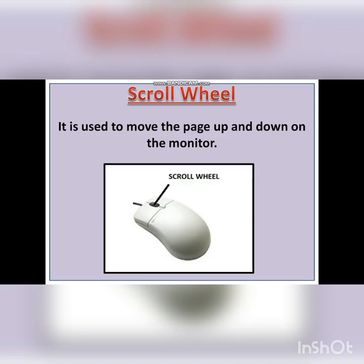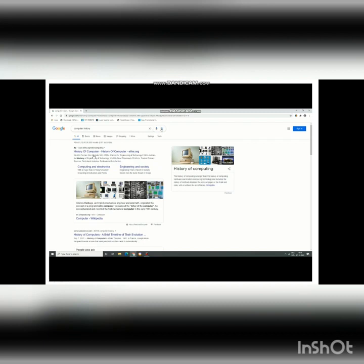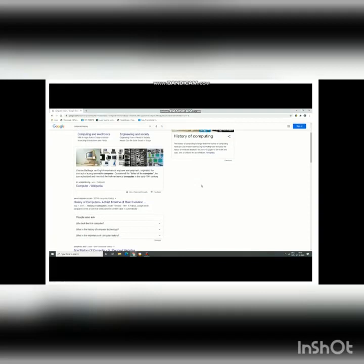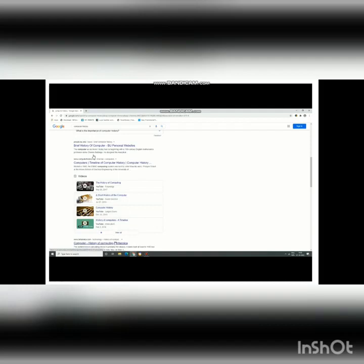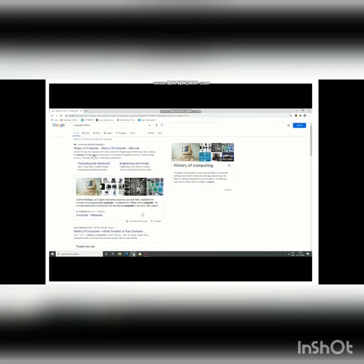Scroll wheel. The scroll wheel is used to move the page up and down on the monitor. Children, you can see the scroll wheel placed between the left and right mouse buttons. This wheel, which can go up and down, is called the scroll wheel. In the video provided, I am searching about computer history — there is a list of websites showing all the content — and with the help of the scroll wheel, I can move the page up and down very easily, and go whichever direction I want.